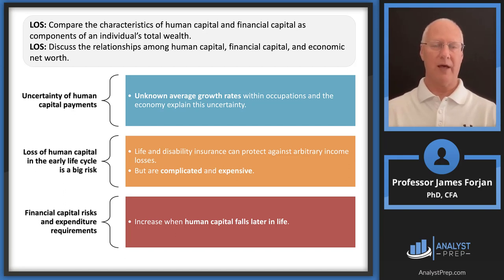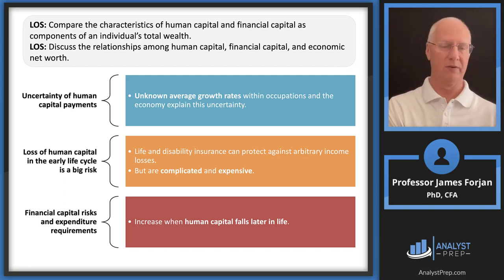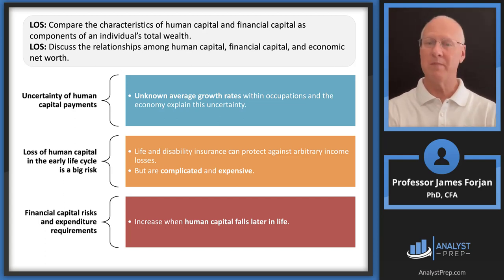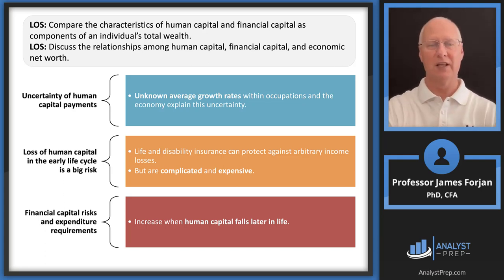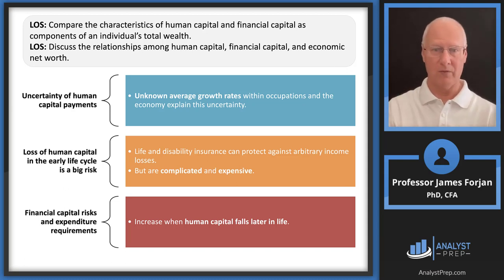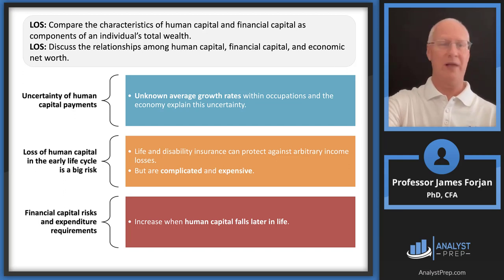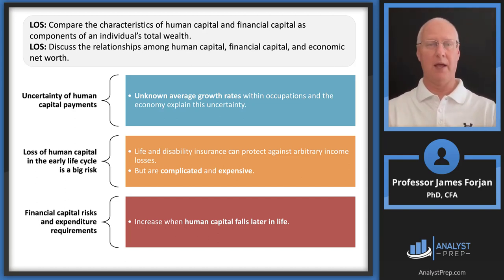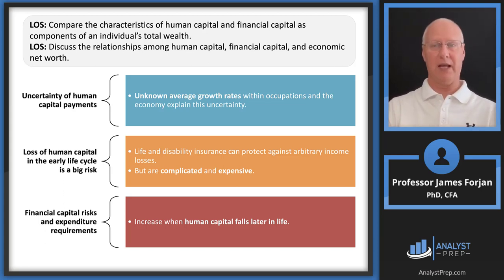Uncertainty of human capital payments relates to levels of interest rates, inflation, and general employment levels. If the economy expands steadily at 5% per year, you can much more easily predict human capital payments than if the economy is volatile. Loss of human capital early in the life cycle is significant — a disability when young means you don't have all your remaining lifetime to compound to a larger future value. Financial capital risks increase over the course of a lifetime, while human capital risks fall later in life — just think of them as opposites.